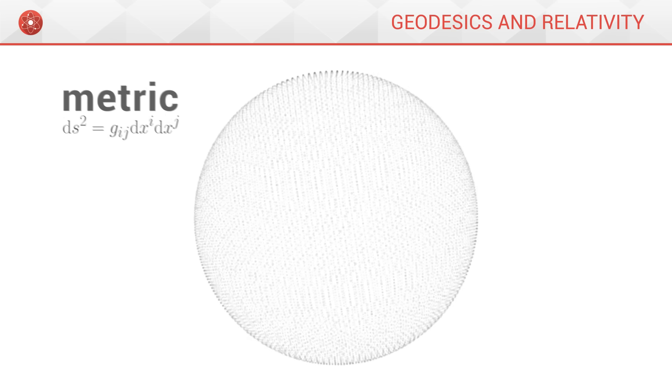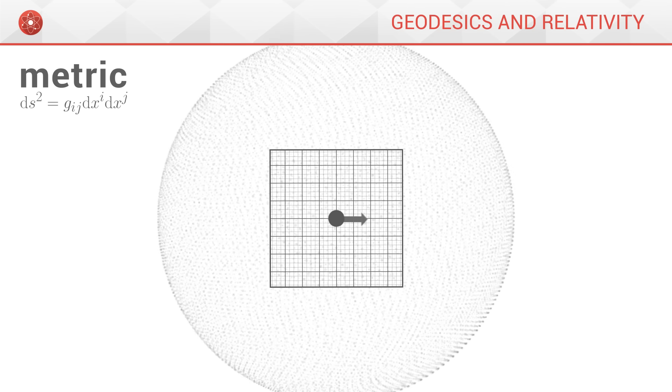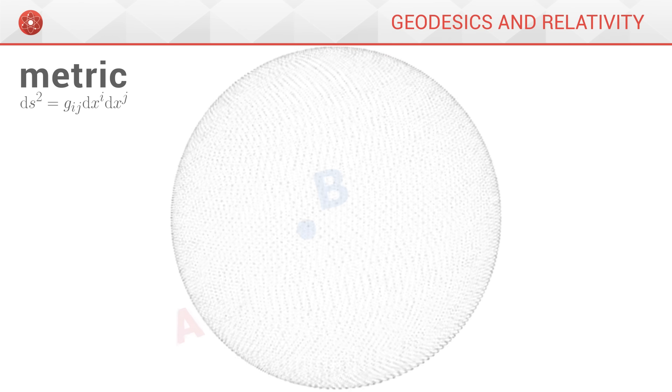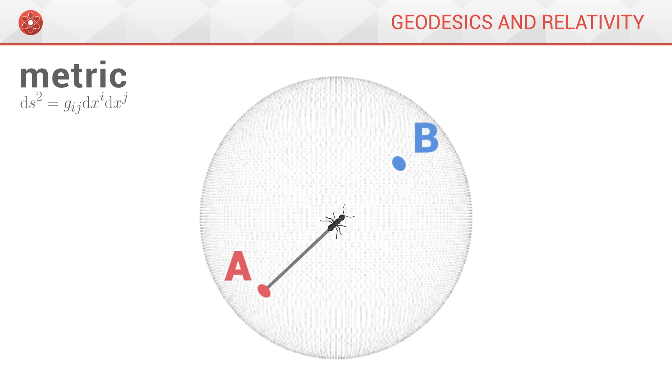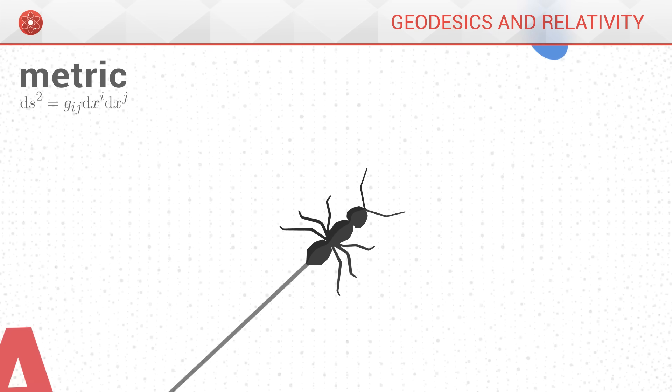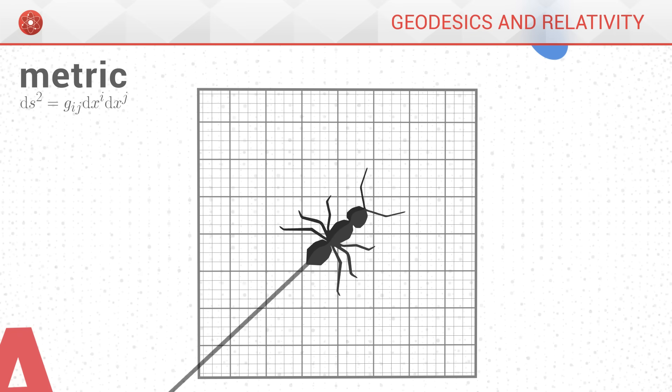A metric is a mathematical tool, which, at any point, gives us a grid tangent to the object along which we can measure lengths and angles. To measure the length of the whole path travelled by the ant, we would add the length of each of its steps. At each step, the metric gives us a grid within which we can measure the small distance that the ant has just covered.